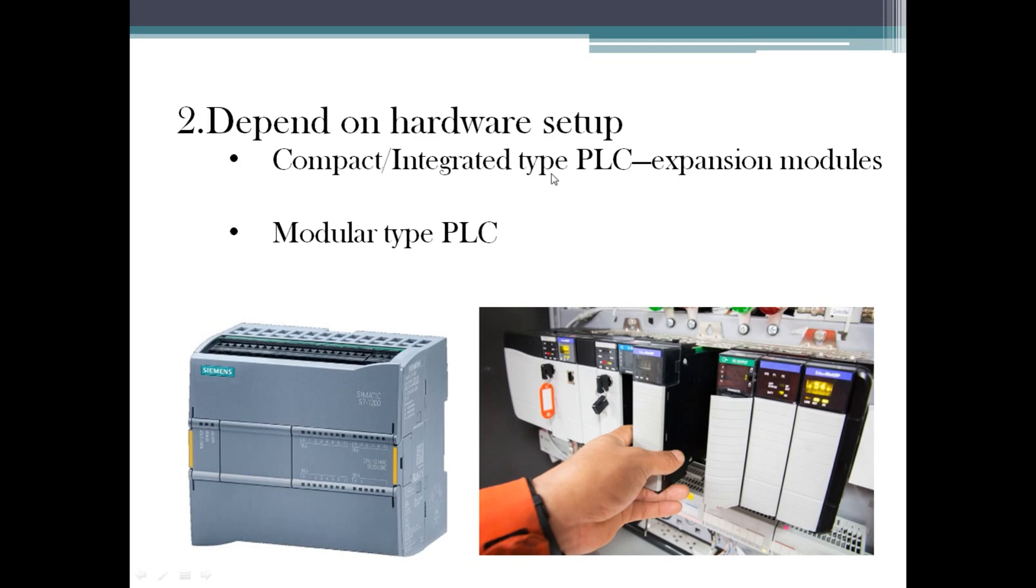When you are running out of IOs you can make use of the expansion modules. Expansion modules are nothing but extra IO modules. In our case we need six or seven IOs, that time you can get the extra input module. By connecting this CPU and this PLC and this expansion module you can make the communication and get your extra IOs. Some manufacturers will have the facilities to have the expansion modules.